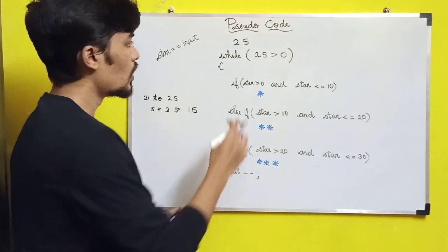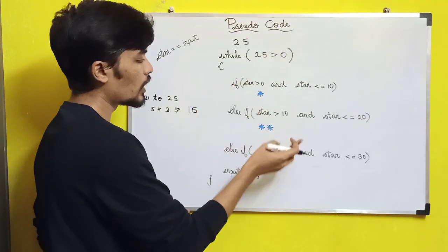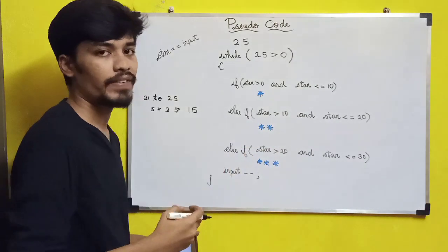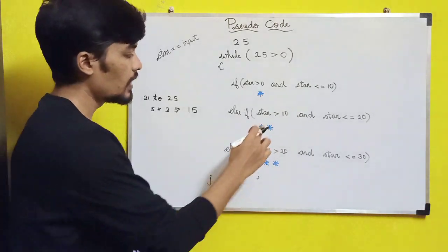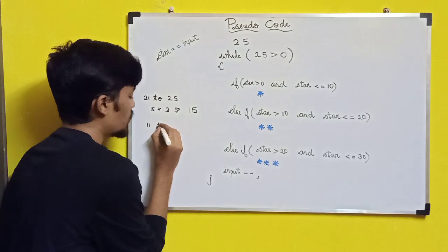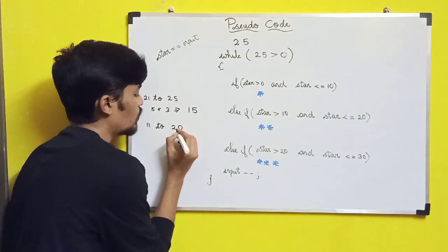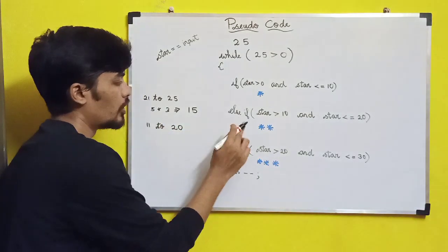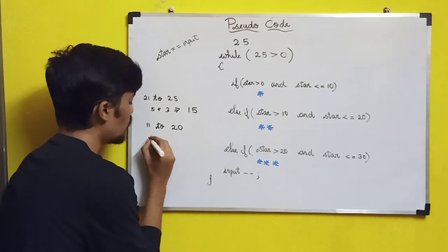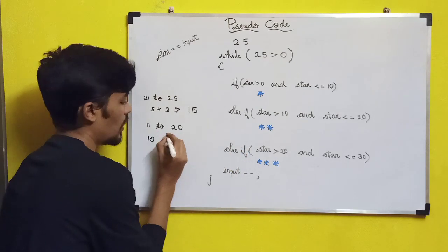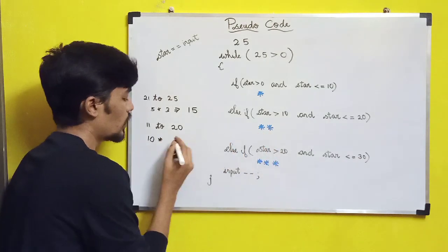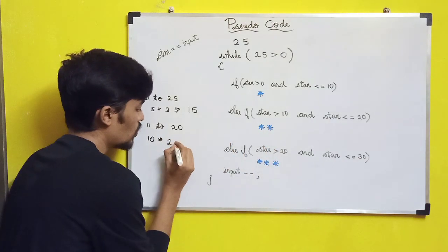Then values 20, 19, 18, 17 down to 11 satisfy the second else-if condition. So 11 to 20 satisfies the first else-if condition — 10 values into 2 stars equals 20 stars.